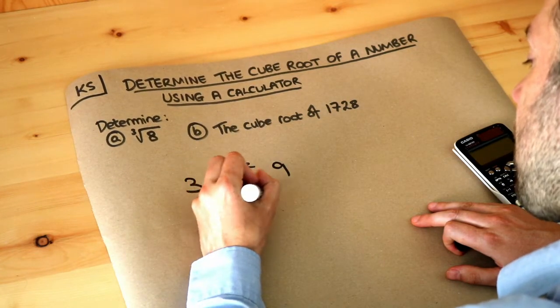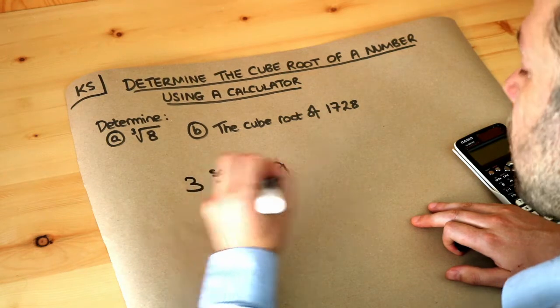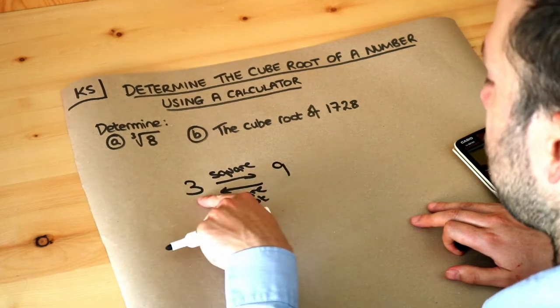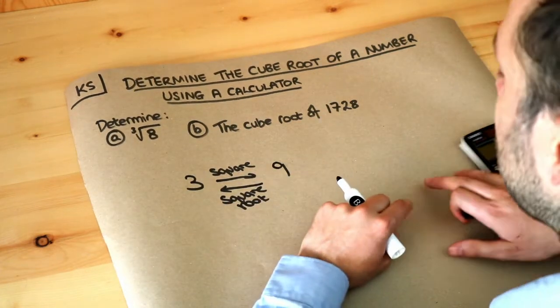So if you square rooted 9, it asks the question: what squared gave you 9? Well, it's 3, so the square root of 9 is 3. Square rooting is the opposite of squaring.